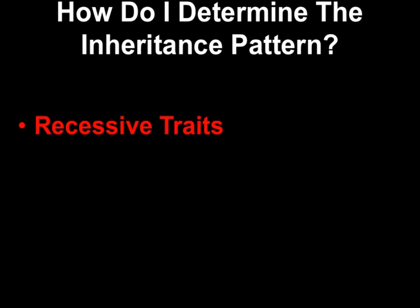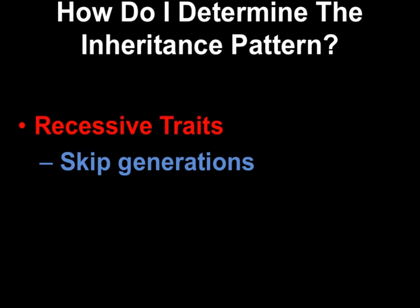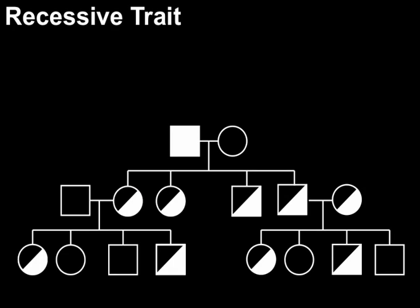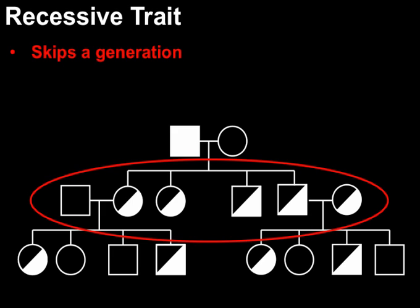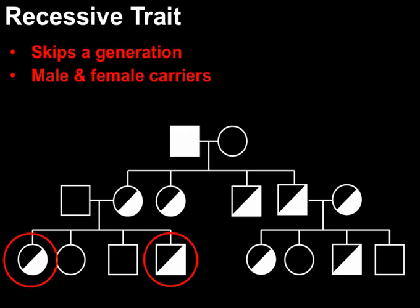What about recessive traits? These are ones that often skip generations, and you are going to have carriers — both male and female carriers. Here's an example of a recessive pedigree. Notice it skipped a generation; nobody in the second generation has it. We have a whole bunch of carriers, but nobody actually has the trait, and there are male and female carriers.